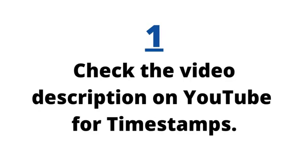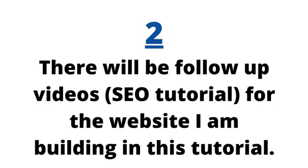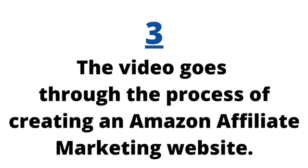Seven quick things I want to go through before the tutorial. Number one: check the video description on YouTube for timestamps in case you want to jump to a specific portion of the video. Number two: there will be follow-up videos — mainly an SEO tutorial for the website I'm building. The main way I drive traffic to my websites is with search engine optimization, so my goal is to build out content to drive search engine traffic, which leads to more Amazon affiliate marketing sales.